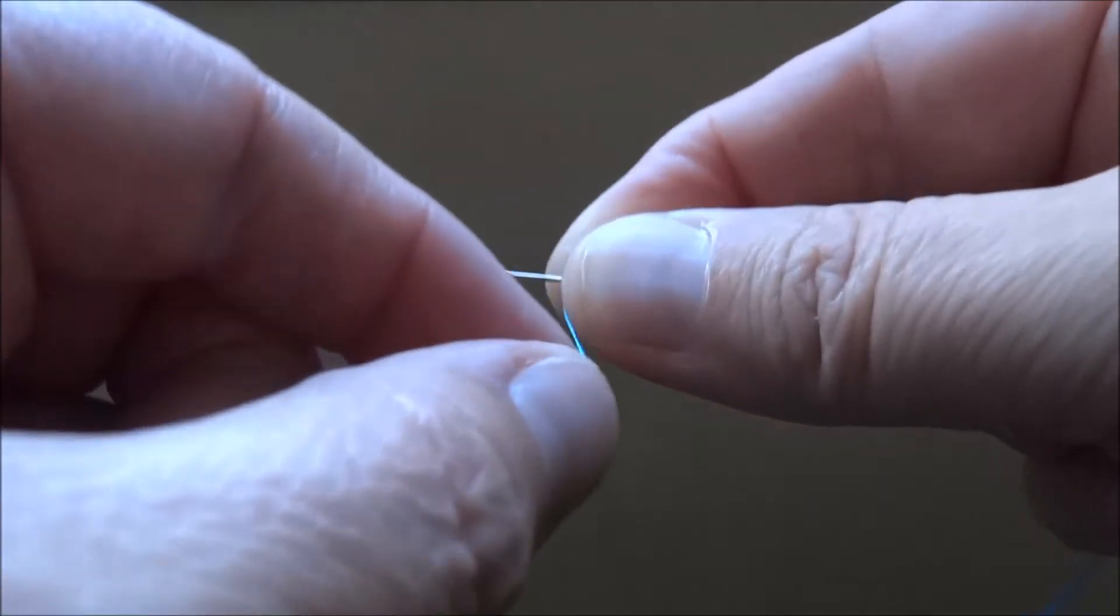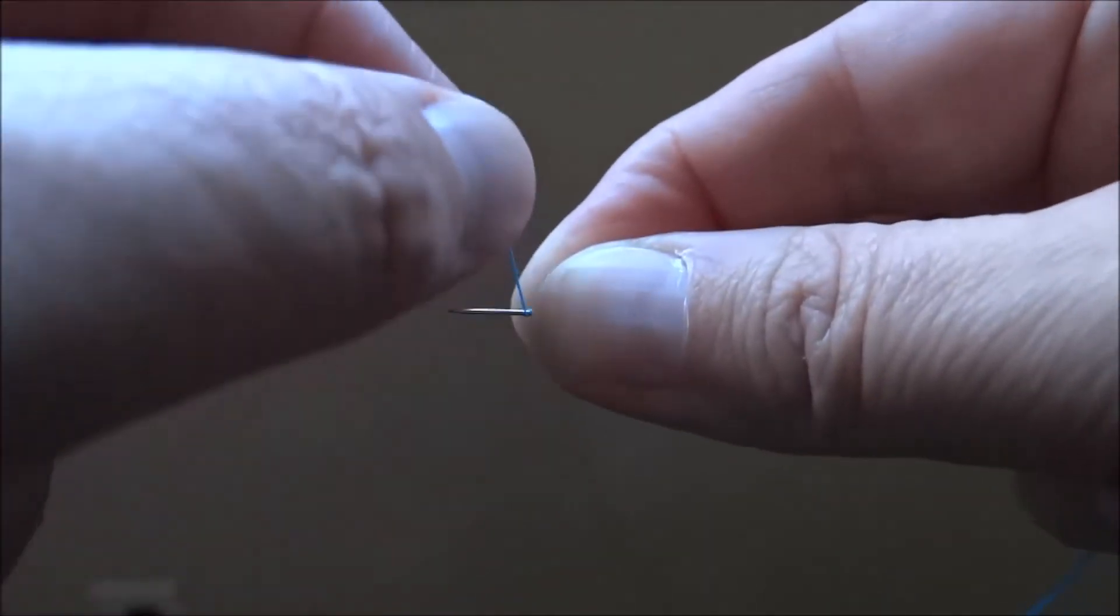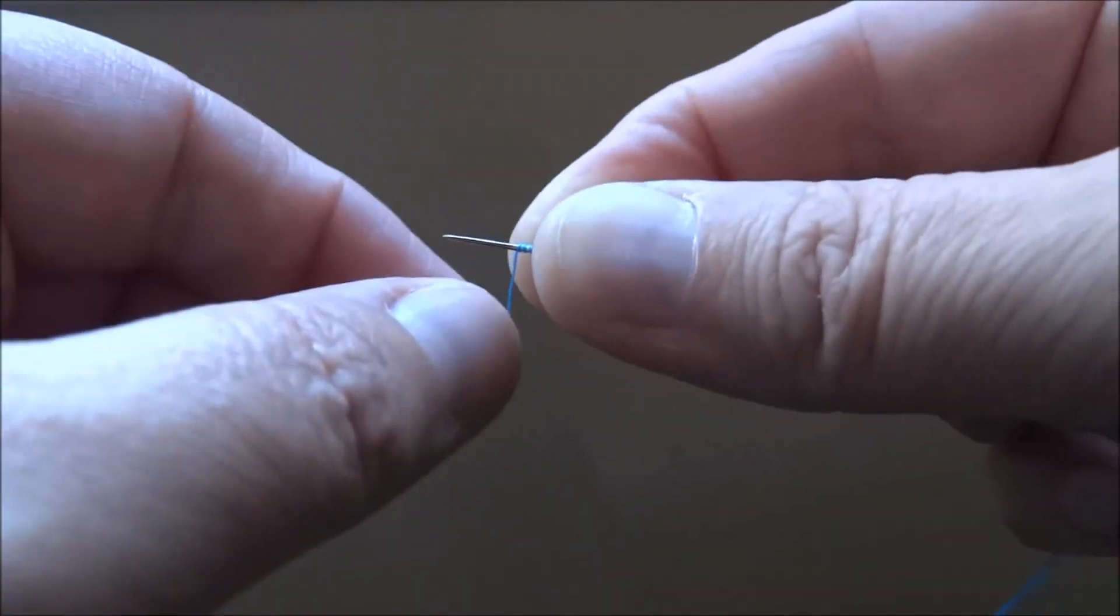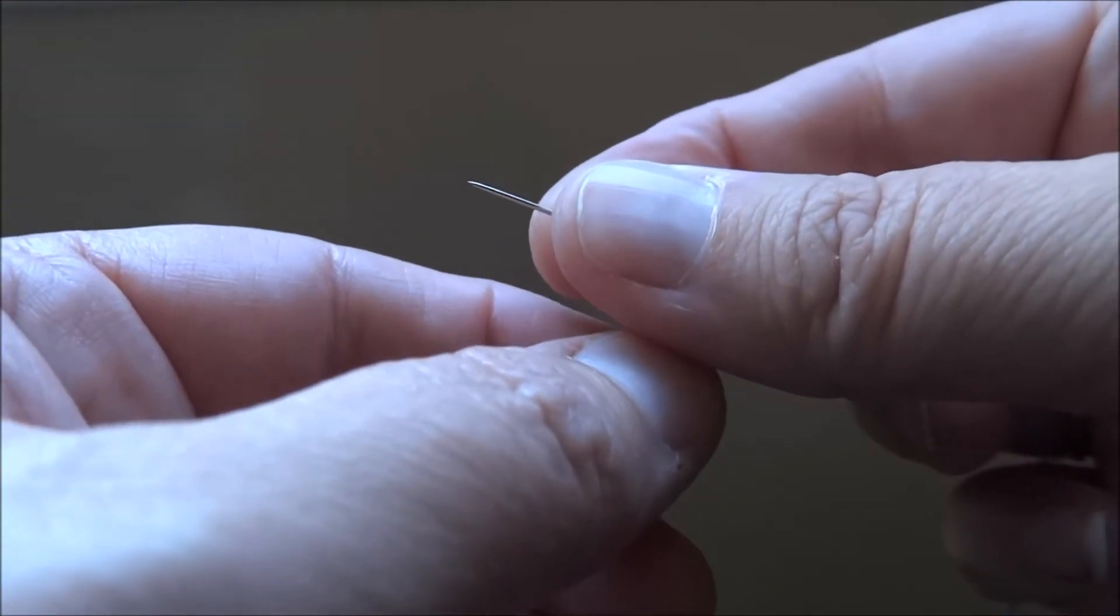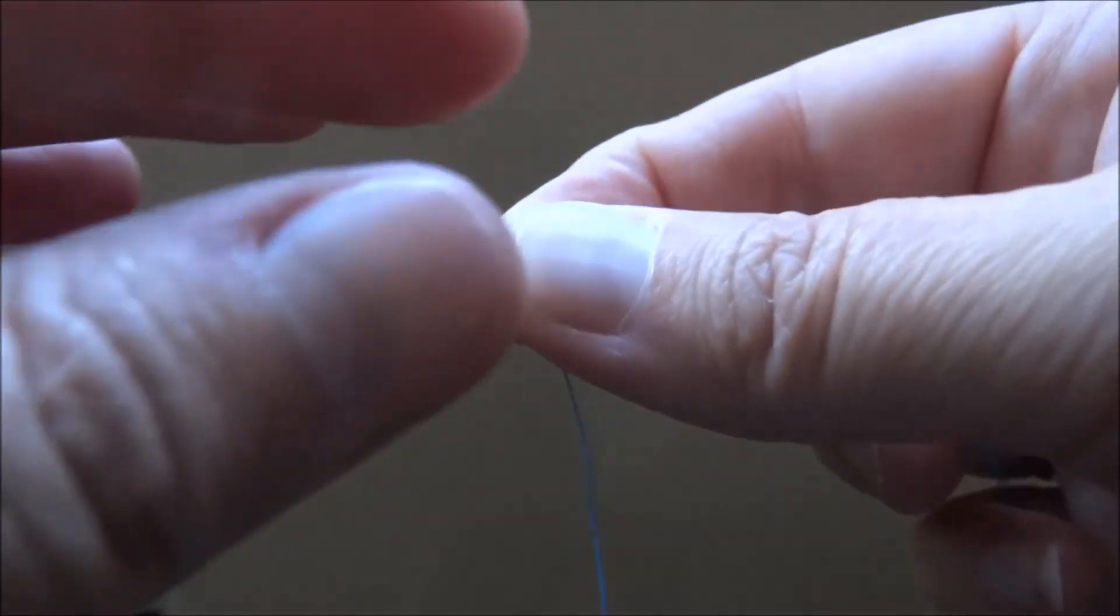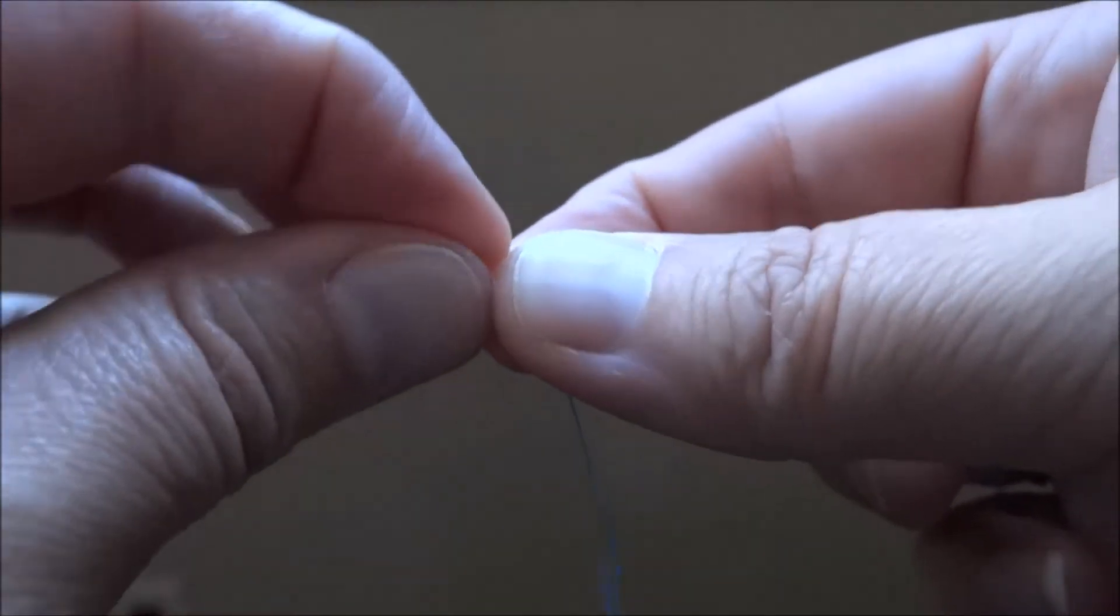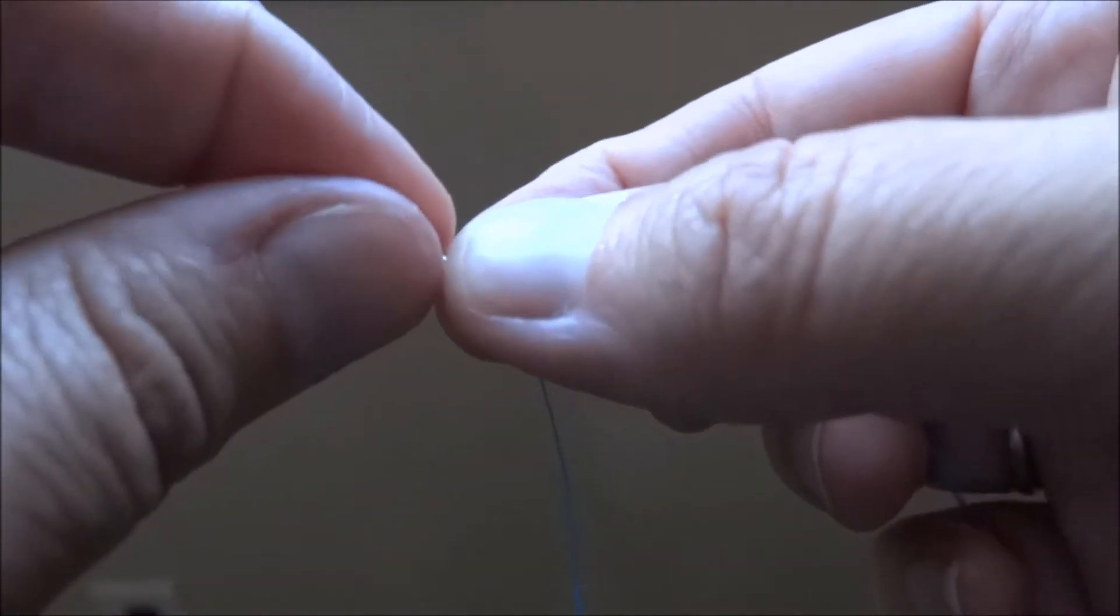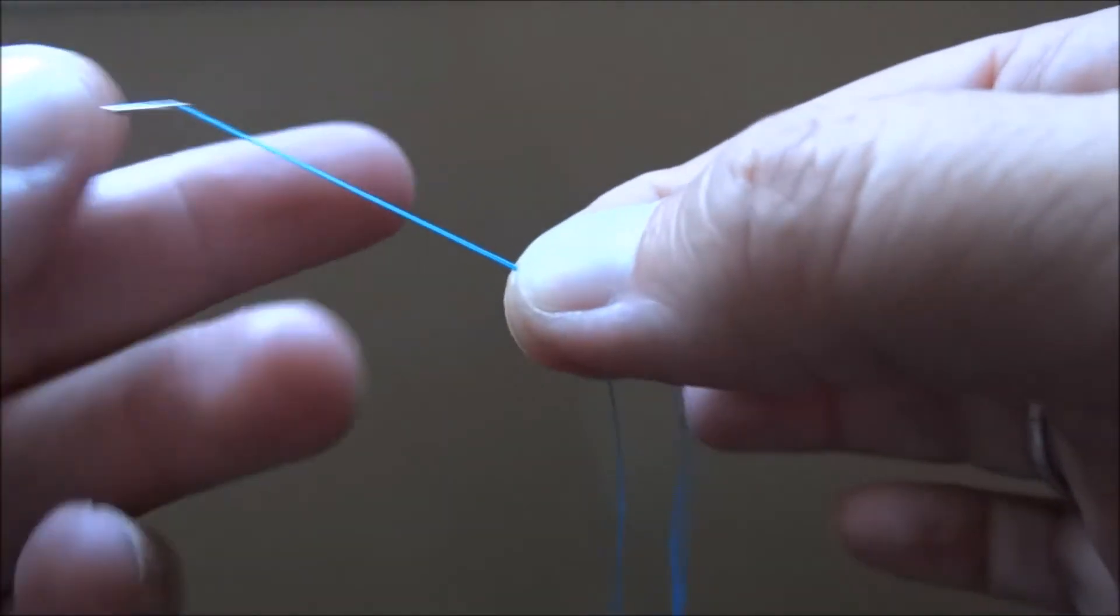You're going to go around one, two, three times, and you're going to pull that knot down underneath those two fingers. Then you grab the tip of the needle and pull the thread through that knot.